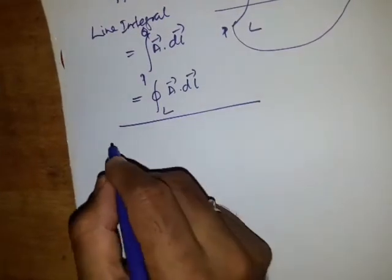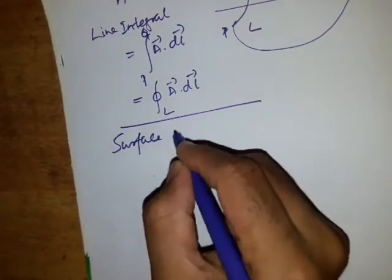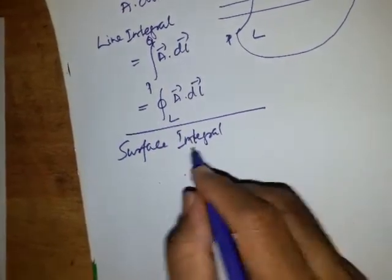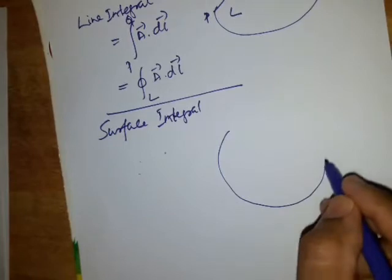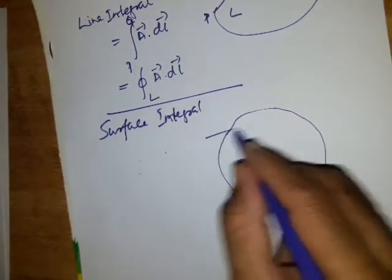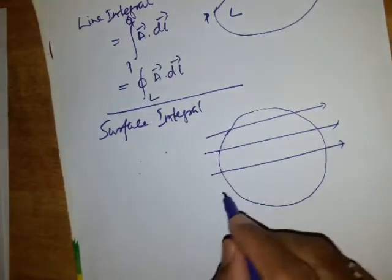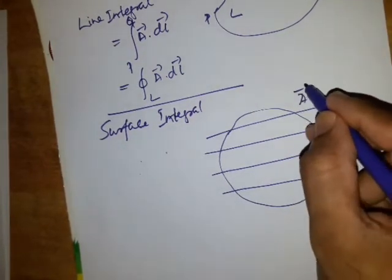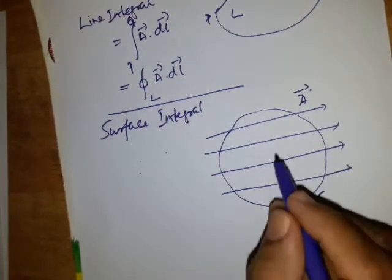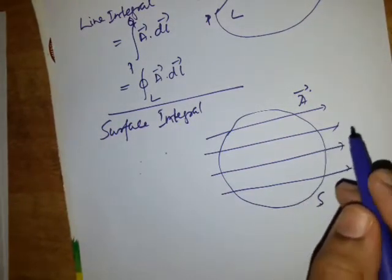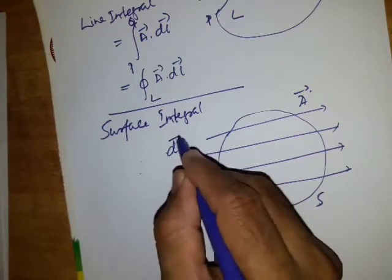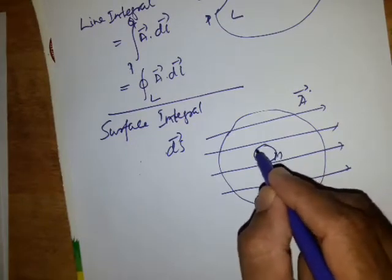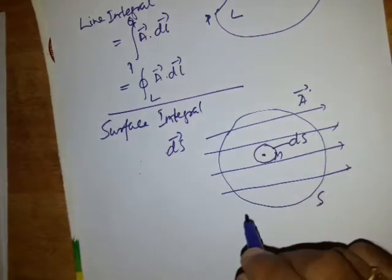Now let us discuss surface integral. Now imagine a surface in a vector field of A. So this is the vector field of A and this is the surface S. This surface is made up of small elemental surfaces DS. And consider one point M around which there is a small elemental surface DS.